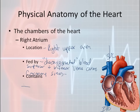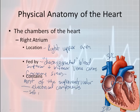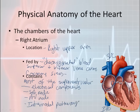The right atrium contains most, but not all, of the supraventricular electrical components. Specifically, it contains three key structures we will cover in the next lecture: the SA node, the AV node, and the internodal pathways.